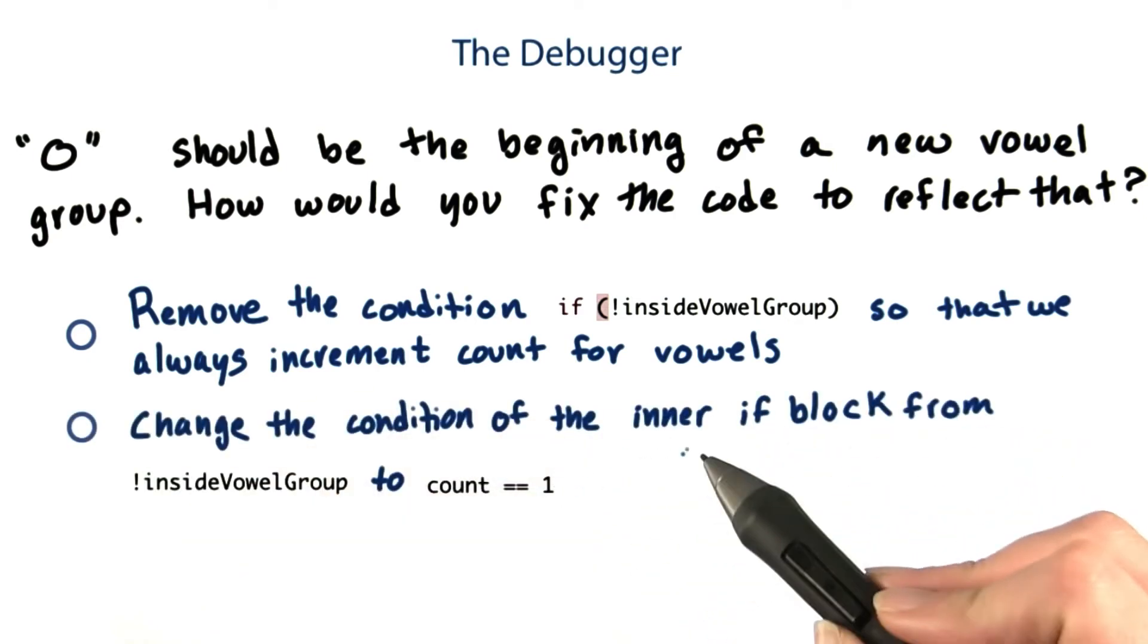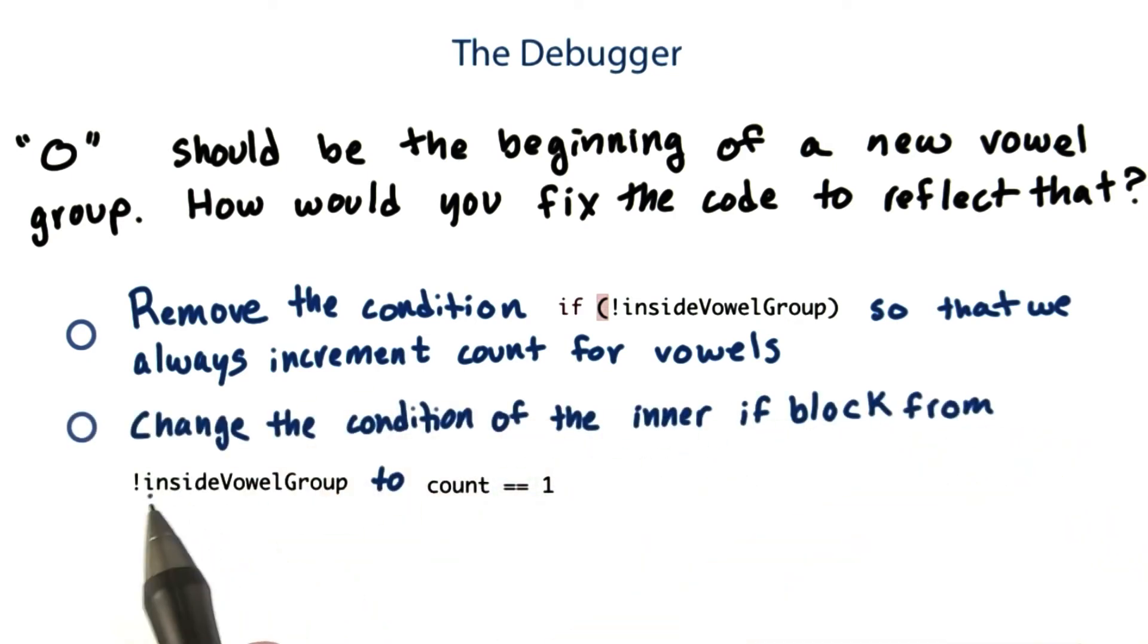We could change the condition of the inner if block from not inside vowel group to count equals equals one.